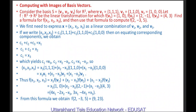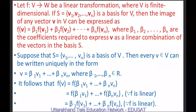Substituting C1, C2, C3 back, we get (x1, x2, x3) = x3·V1 + (x2 − x3)·V2 + (x1 − x2)·V3. Therefore, F(x1, x2, x3) = x3·F(V1) + (x2 − x3)·F(V2) + (x1 − x2)·F(V3), applying the result that F(v) = β₁·F(V1) + ... + βn·F(Vn) where V1, V2, V3 are basis elements and the scalars are the coefficients.